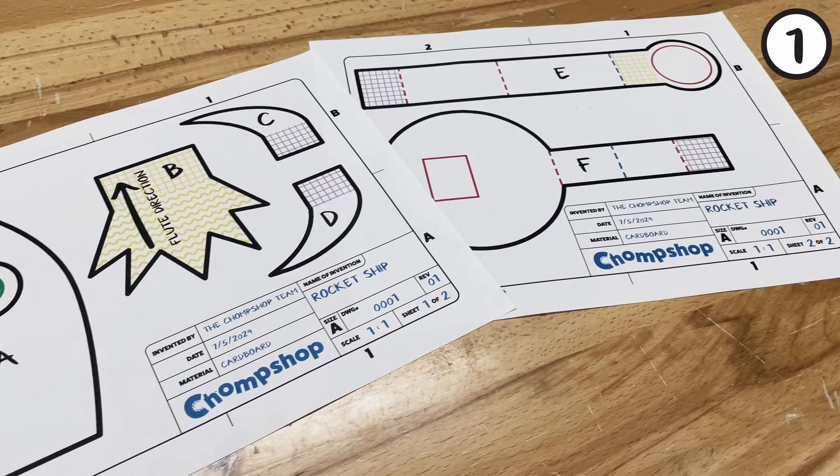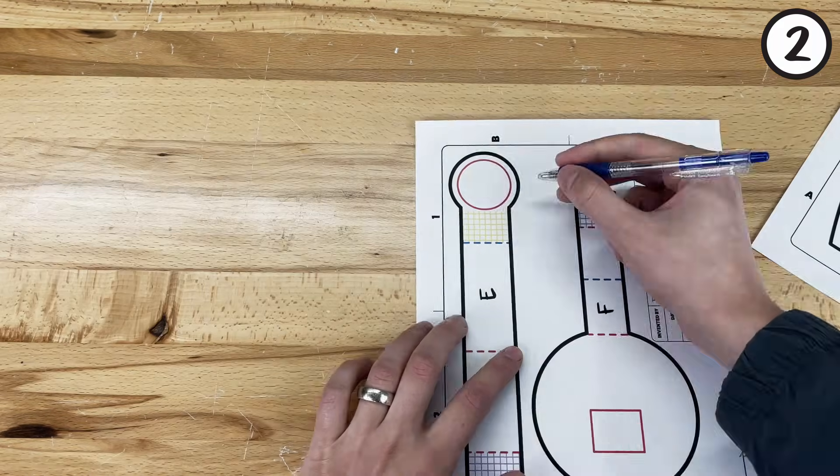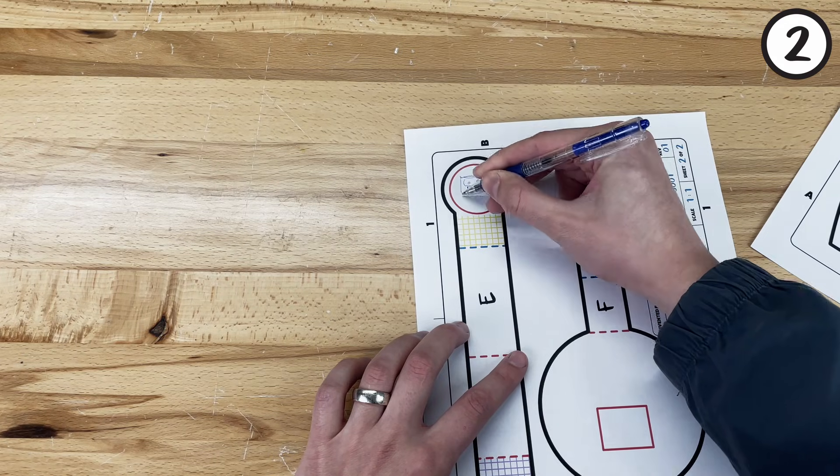Step 1. Print and color your patterns. Step 2. Draw a pilot on the red circle on Part E.